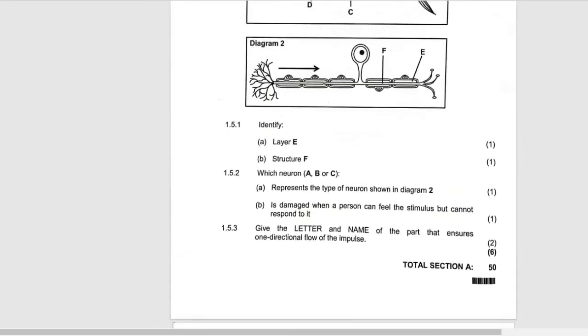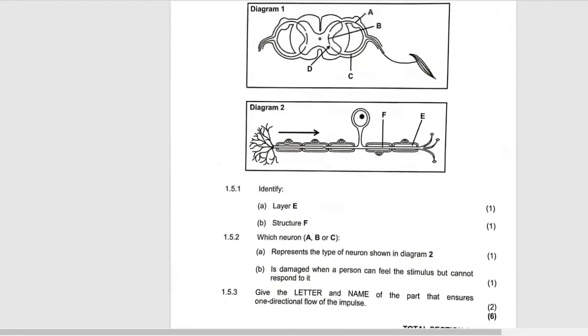For example, when you're going to remove a tooth, the doctor injects you and then you don't feel pain, but if the doctor asks you to open the mouth, you're able to open the mouth. It means you don't feel the pain but you can respond with those muscles, so the answer is C, which is the motor neuron.